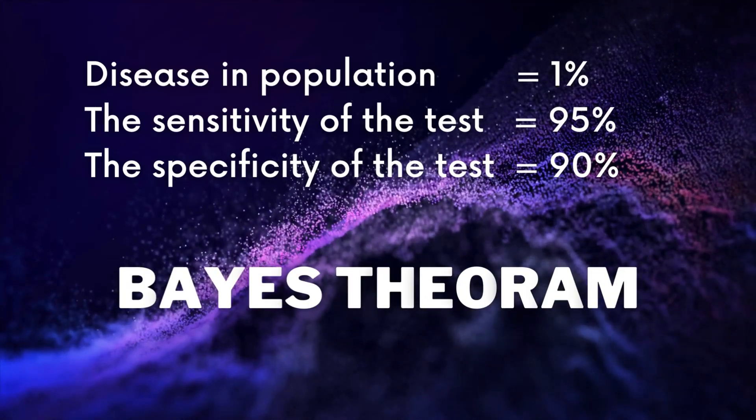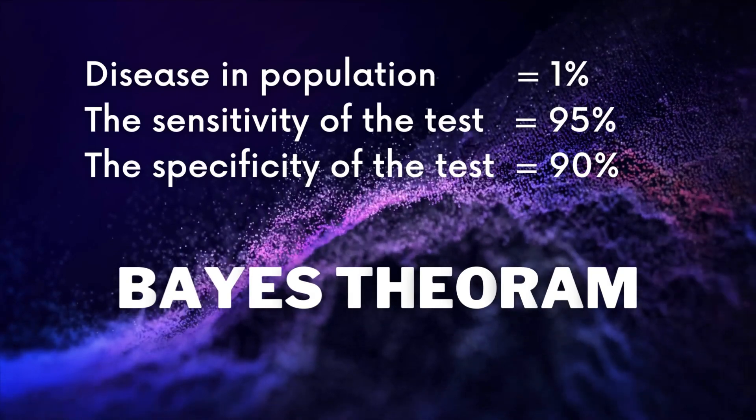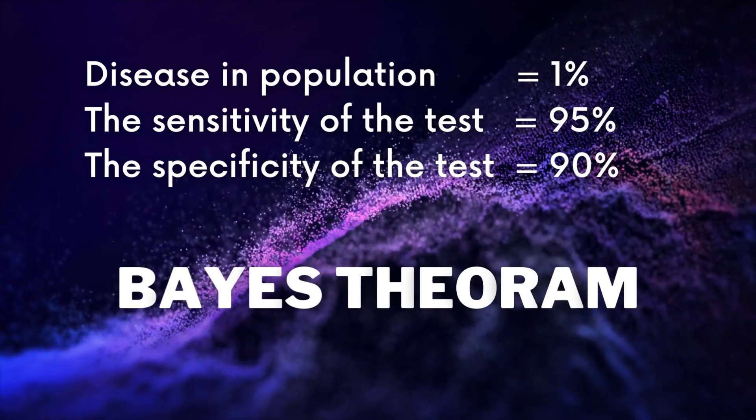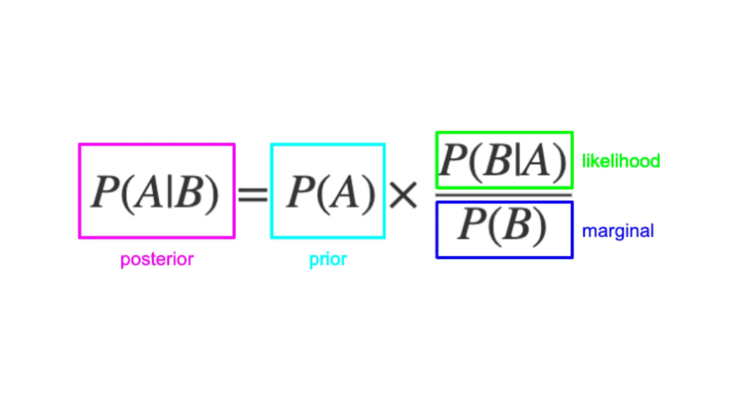we can calculate the probability of a person having the disease given a test result positive. The formula for the conditional probability or Bayes theorem is here, where A is the event of having a disease, B is the event of testing positive.